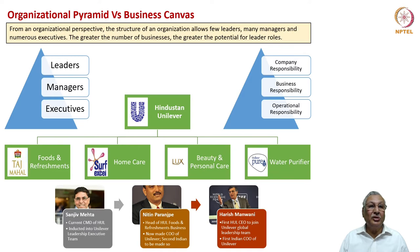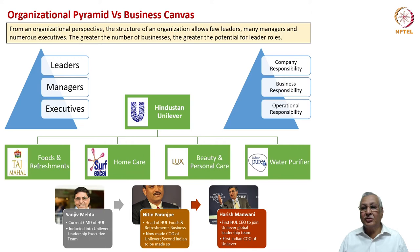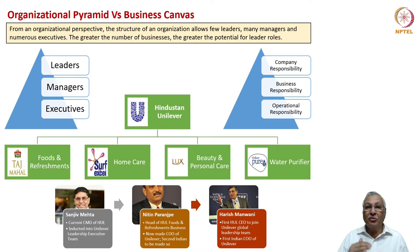The organizational pyramid has three layers: the executive layer, the managerial layer and the leadership layer. From the point of view of responsibility: executives have operational responsibility, managers have business and performance responsibility, whereas leaders have overall corporate responsibility. Taking the example of Hindustan Unilever with four verticals — foods and refreshments, home care, beauty and personal care, and water purifiers — Sanjiv Mehta, the CMD of HUL, was inducted into the Unilever leadership executive team globally. Nitin Paranjpe, head of HUL foods and refreshments, was made COO of Unilever, and Harish Manwani was the first HUL CEO to join the Unilever global leadership team.